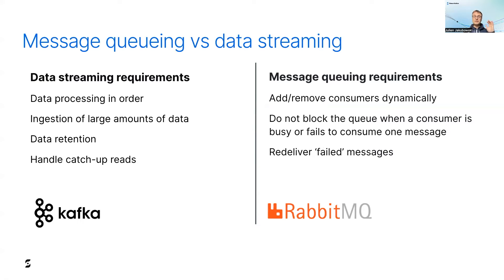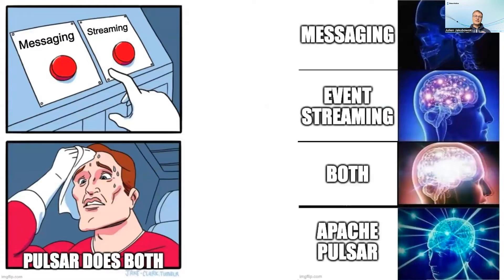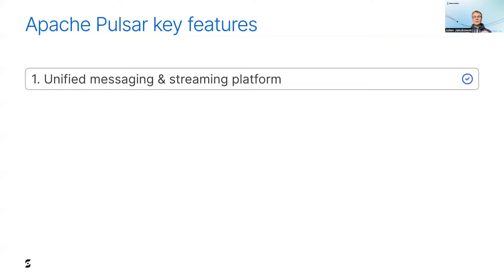Does it mean you have to choose between messaging and streaming? Or do you have to manage two different platforms — one for messaging and another for data streaming? This is not a dilemma with Pulsar. With Pulsar, you can do both using the same platform, the same technology. So you have only one SDK to learn as a developer, and you have only one broker to manage in production. This is why we say that Pulsar is a unified messaging and data streaming platform.